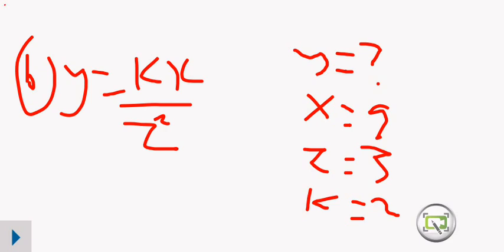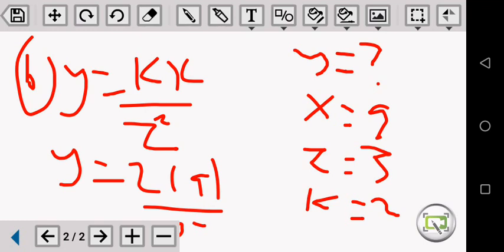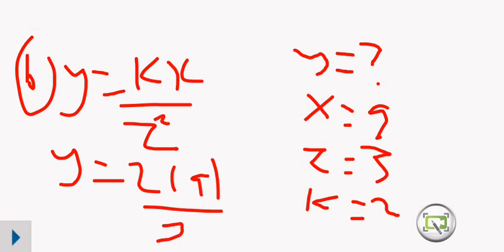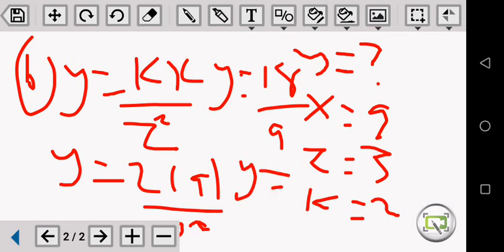By knowing that our equation is Y equals KX over Z squared, we need to find the value of Y. What is K? K is 2. What is X? X is 9. What is Z? Z is 3, so Z squared is 3 squared. Y is equal to 2 times 9, which is 18, over 3 squared, which is 9. So the value of Y is equal to 18 divided by 9, which is 2.